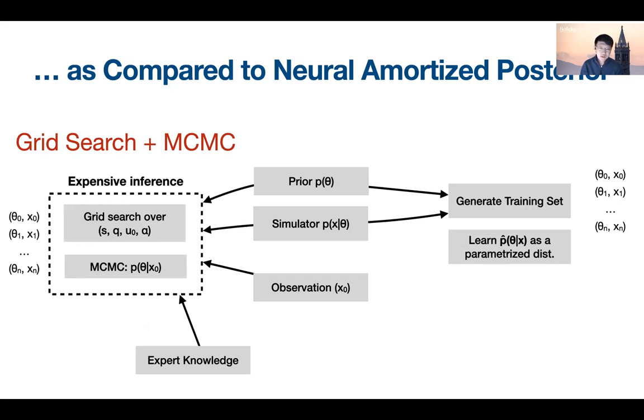During inference, because we can get rid of the slow simulator, we can use the learned distribution to generate millions of discrete posterior samples in seconds for any observation. This allows for real-time and automated inference. We call this approach neural amortized posterior. Amortization means all the simulation cost is paid upfront before inference of any particular event, which is what allows for the order of magnitude speedup.